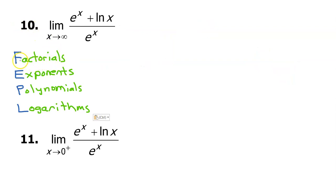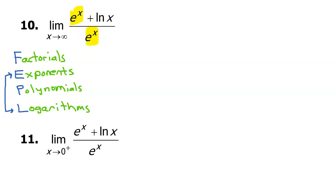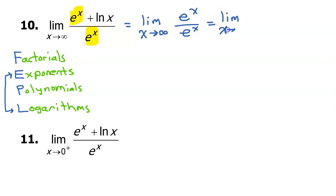For number 10, we are going to use the acronym FEPL to help us remember that as x approaches infinity, factorials grow faster than exponents, exponents grow faster than polynomials, and polynomials grow faster than logarithms. Right now we're in a race between exponential terms and logarithmic terms, so this limit will equal the limit as x approaches infinity of e to the x over e to the x. That expression is just 1, so the limit is simply 1.